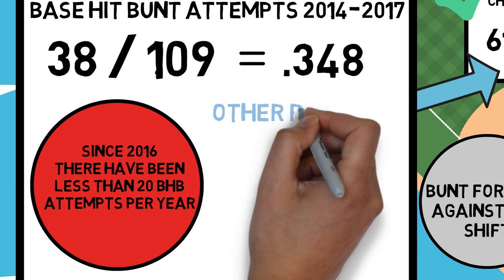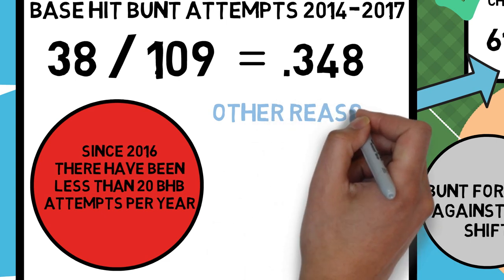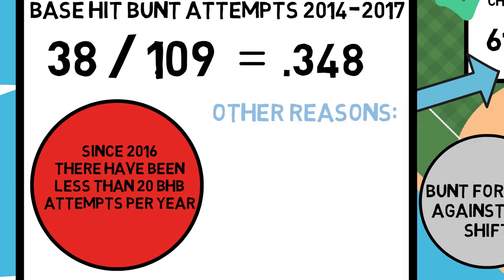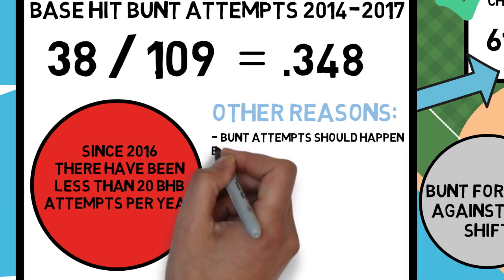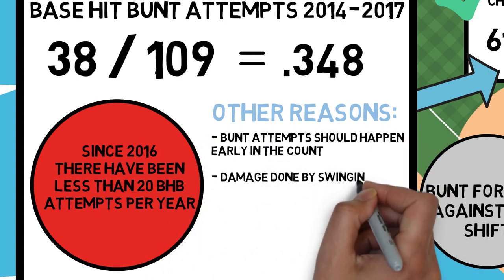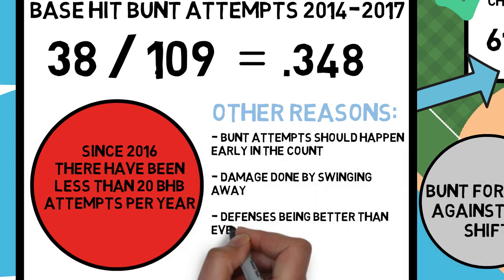This could be for a whole bunch of reasons, such as the typical bunt attempt should happen earlier in counts, which goes against the theory of seeing more pitches and taking walks more frequently. The increased number of home runs on average by a big leaguer, and the fact that defenses are more athletic than ever — all of this leads up to the bunt being used far less than before.